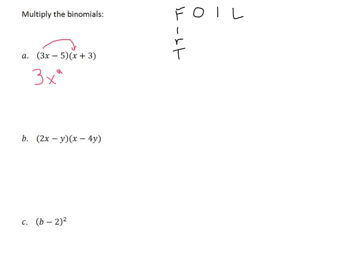And now O stands for outside. So outside would mean I'm going to multiply the outside terms, which are this term right here and this term right here. So that's 3x times positive 3 is going to give us positive 9x.